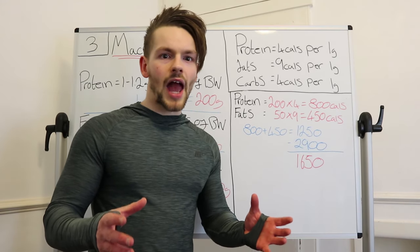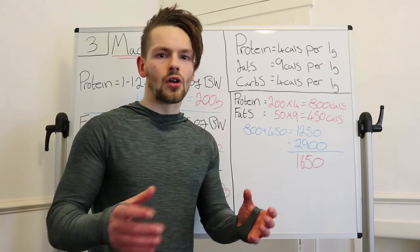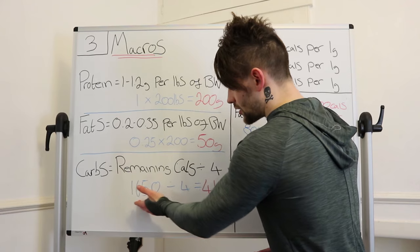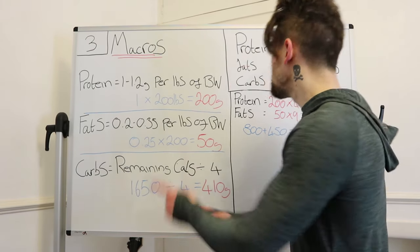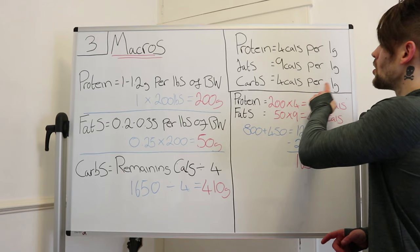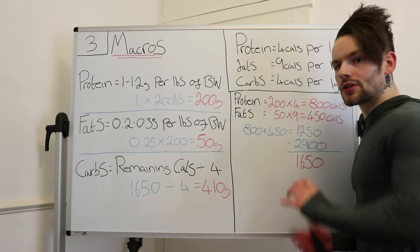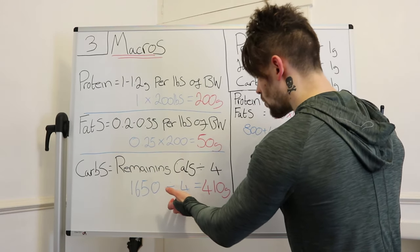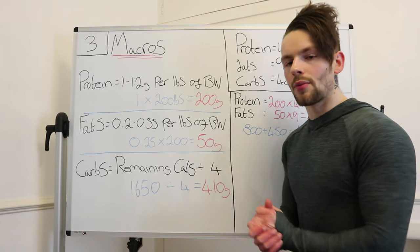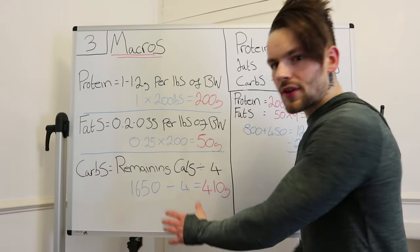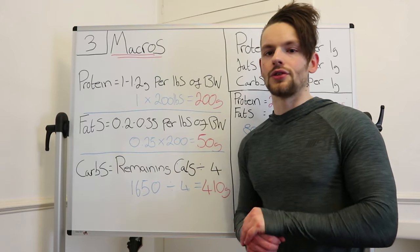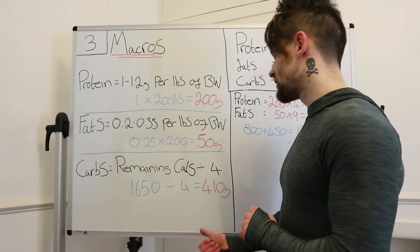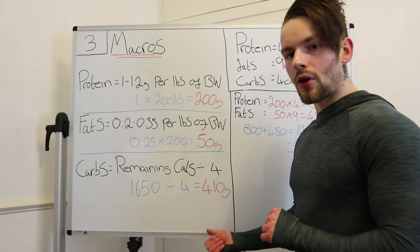Now you know how many calories are coming from carbohydrates, but how many grams of carbs do we actually need? We know 1,650 calories are coming from carbohydrates, and every 1 gram of carbs has 4 calories. So we reverse the equation: 1,650 divided by 4 gives us 410 grams of carbohydrates. So our overall total macronutrient intakes for the day are 200 grams of protein, 50 grams of fat, and 410 grams of carbohydrates.